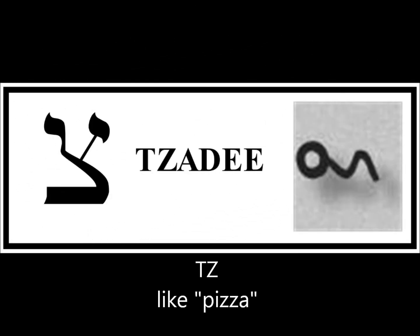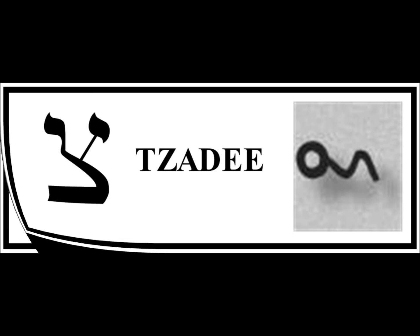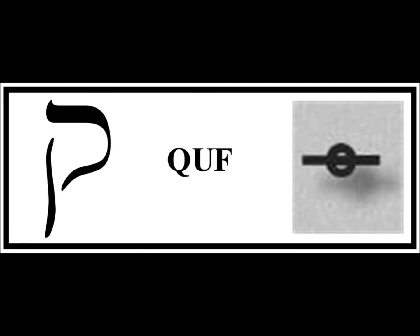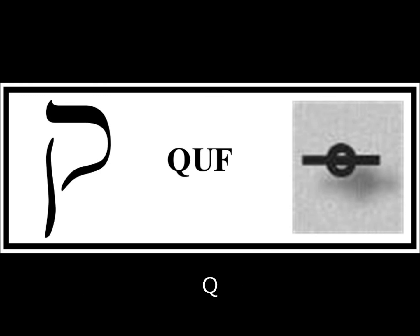Tsadi has a Ts sound. Its numerical value is 90, and it also has a final form. Its pictograph is said to be either a righteous man lying down before the Lord, or a man lying on his side. Kuf has a numerical value of 100. Its pictograph depicts the back of the head, or in its ancient form, the sun on the horizon. It has a K or Q sound.